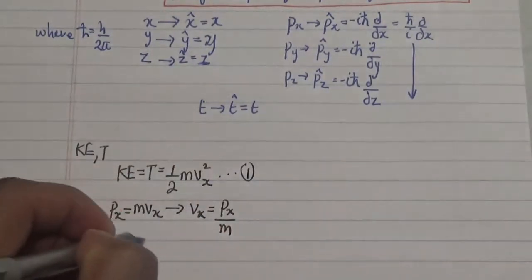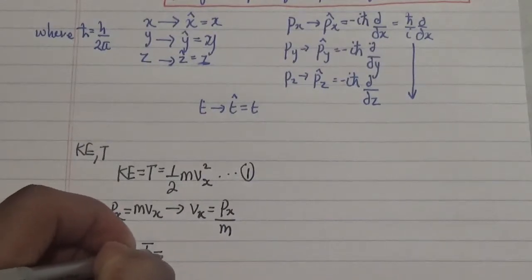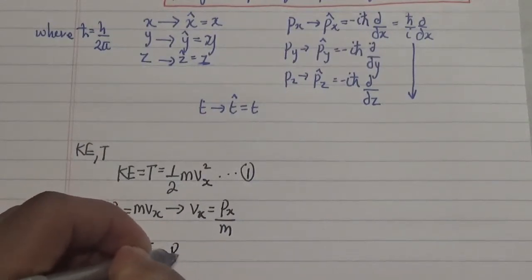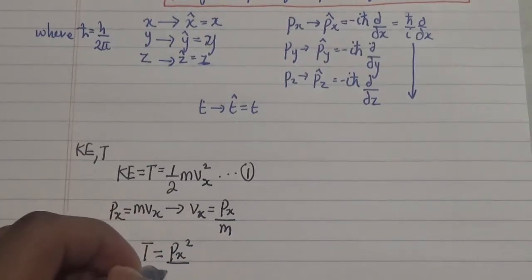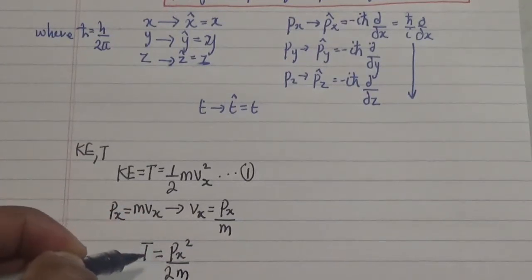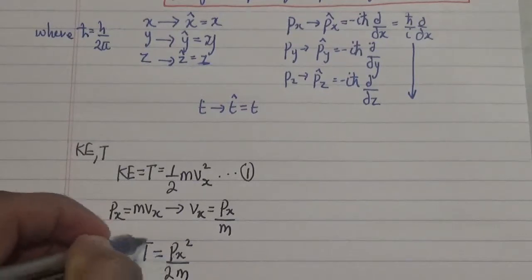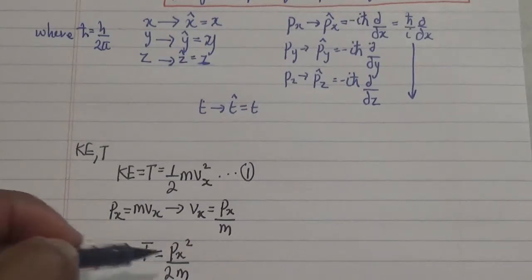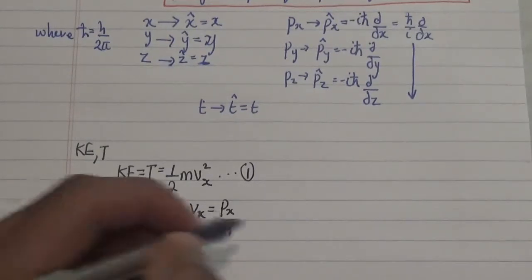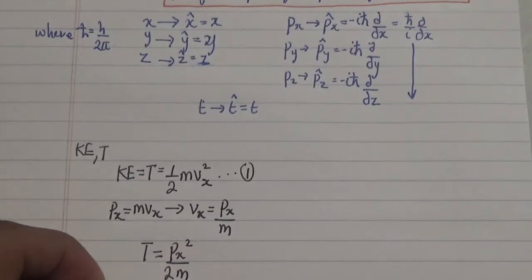Now substituting our velocity in equation 1, what we have is T equals to the momentum squared divided by 2m which is the mass. This is the classical Cartesian coordinate form.